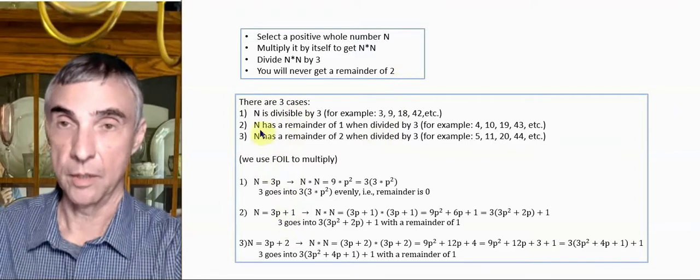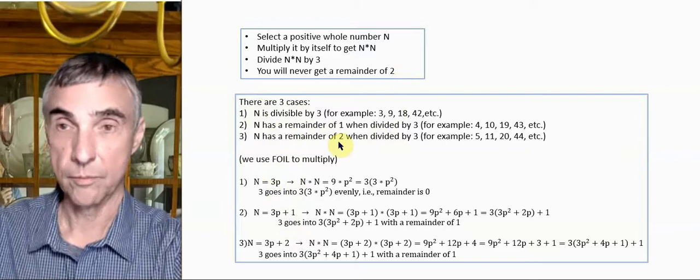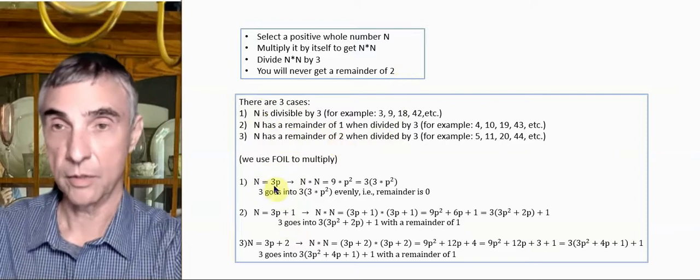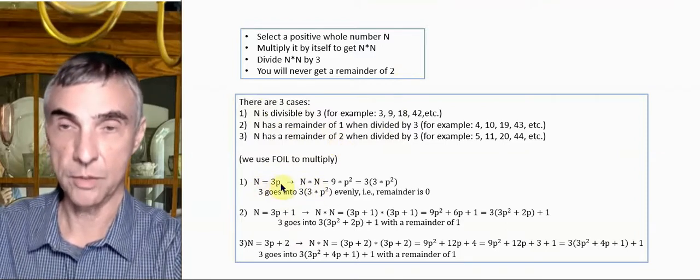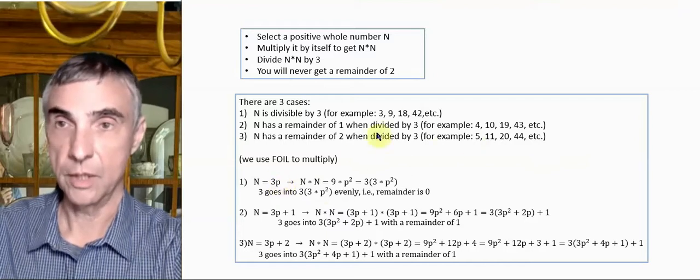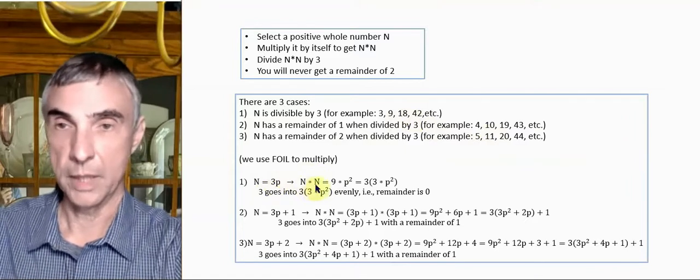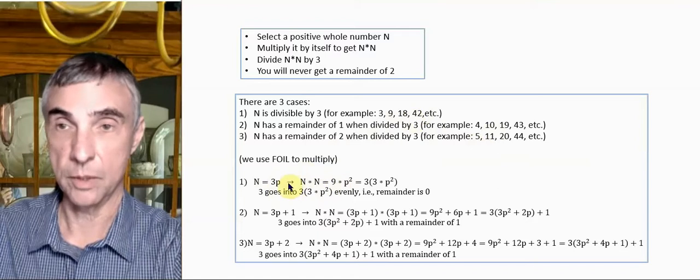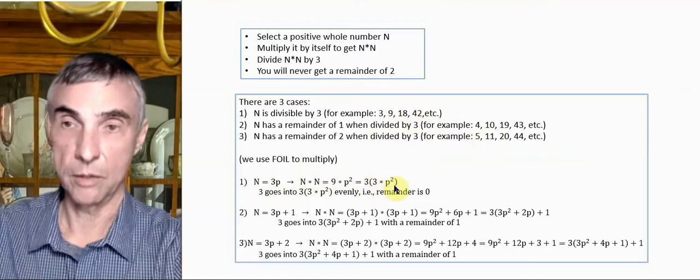There are three cases when you pick a number. Either the number is divisible by 3, or it has a remainder of 1, or it has a remainder of 2. If it's divisible by 3, when you multiply it by itself, like if the number is 3 times some other number, like for instance, 9 is 3 times 3, 18 is 3 times 6, 42 is 3 times 14. Well, if you multiply that number by itself, the 3's become a 9, and then the p becomes a p squared. You can factor out a 3. So this number is obviously divisible by 3, and you get a remainder of 0.